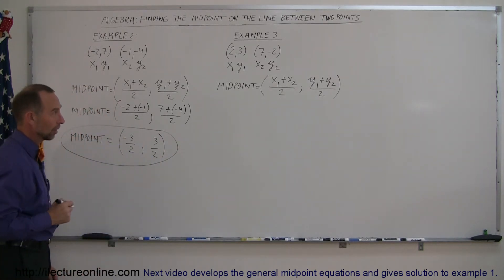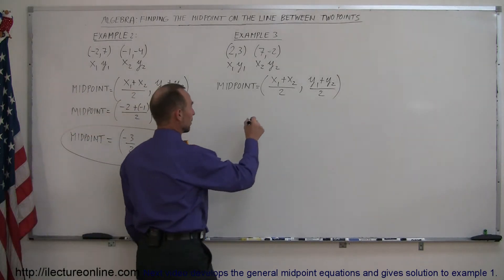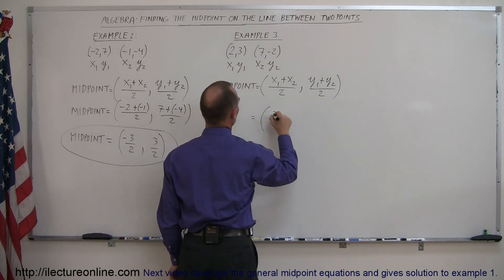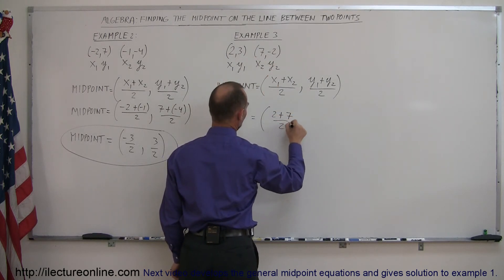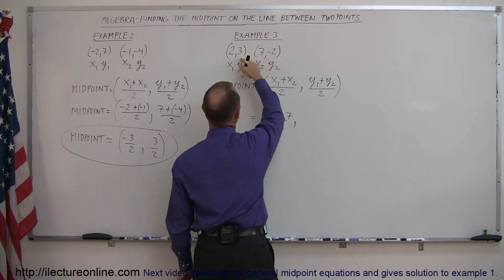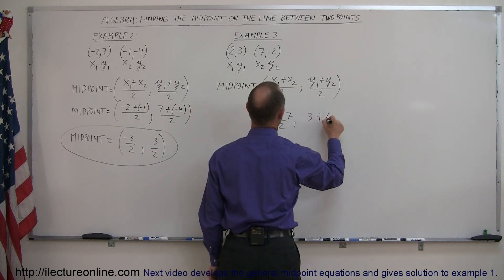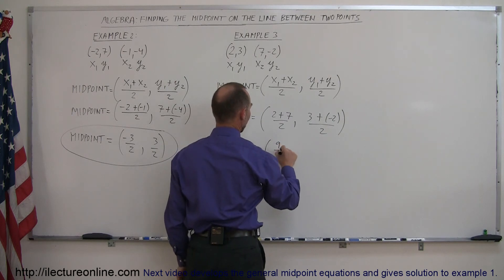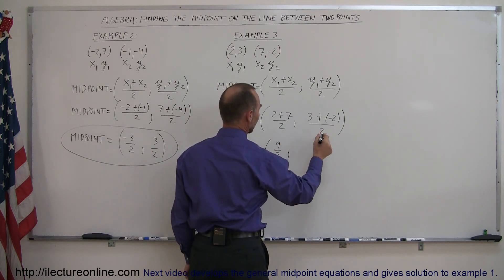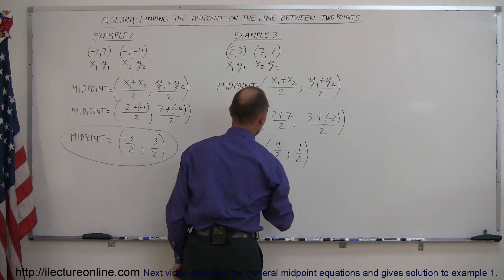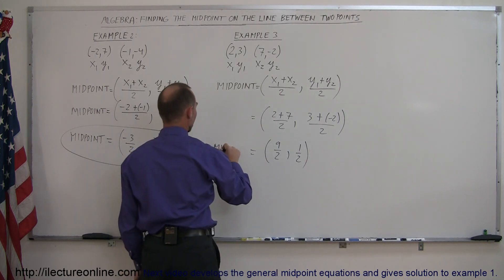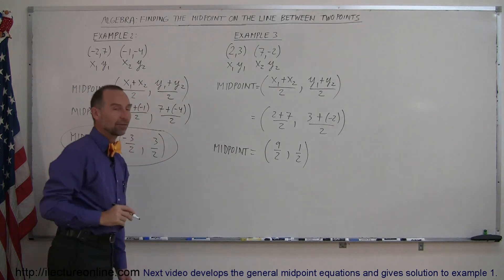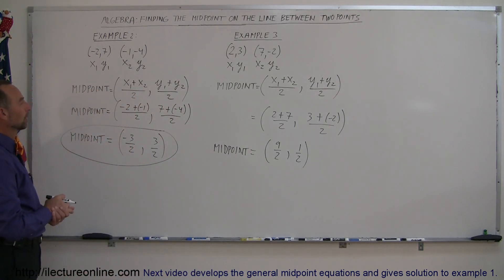For our last example, the midpoint is equal to: x1 plus x2 — here's our x1, there's our x2 — so it's 2 plus 7 divided by 2, and here we have y1 and y2, so we have 3 plus minus 2 divided by 2. That's equal to 9 divided by 2, and 3 plus minus 2 is 1 divided by 2. Those are the x and y coordinates of the midpoint between those two points, and that's how you find the midpoint between any two points on the xy plane.